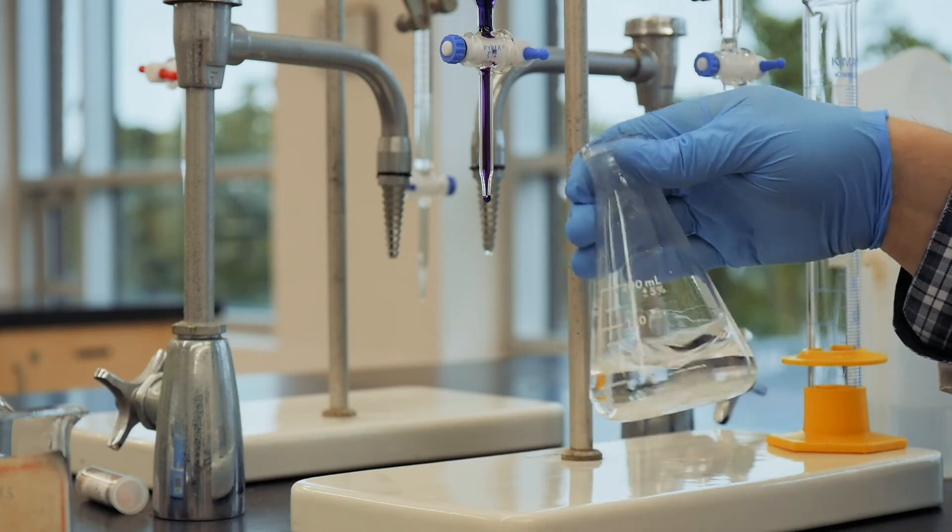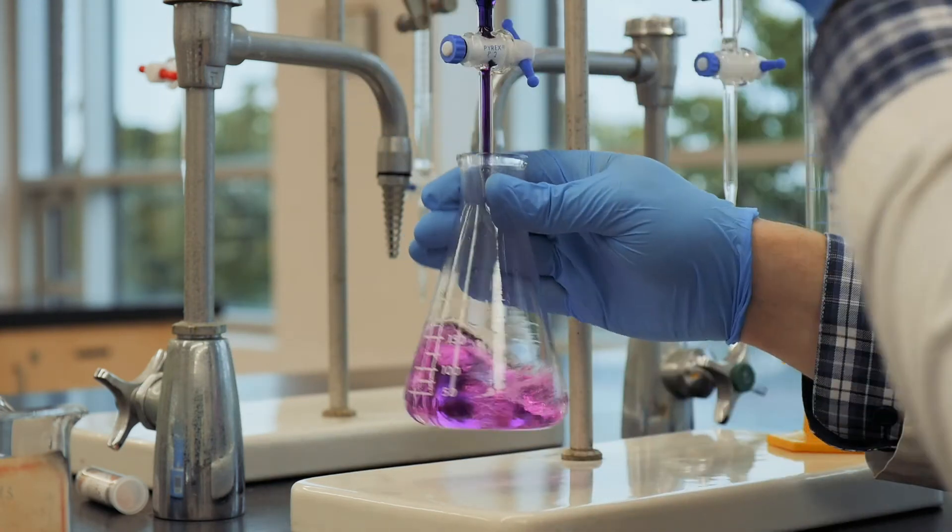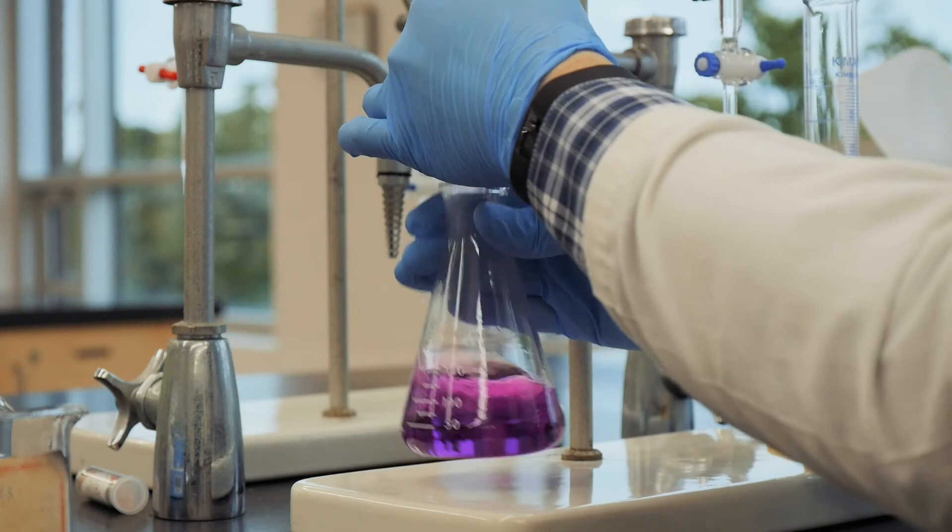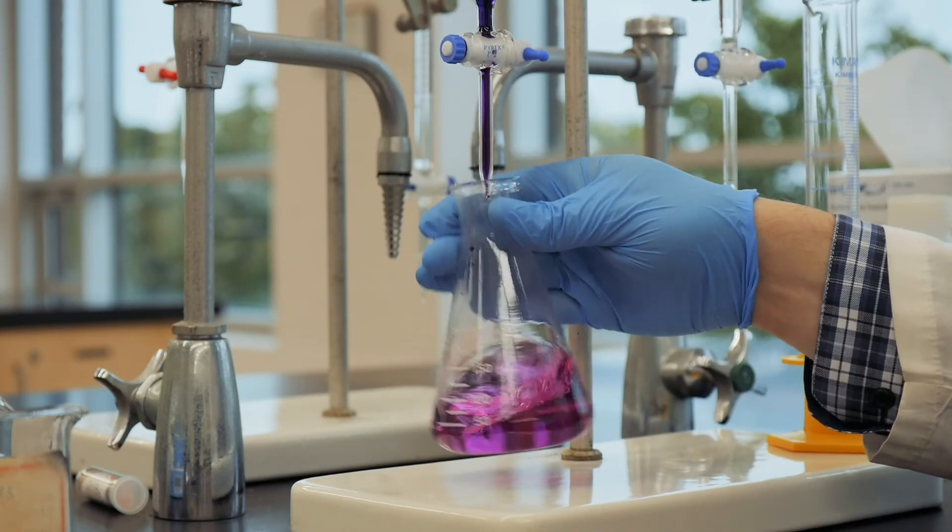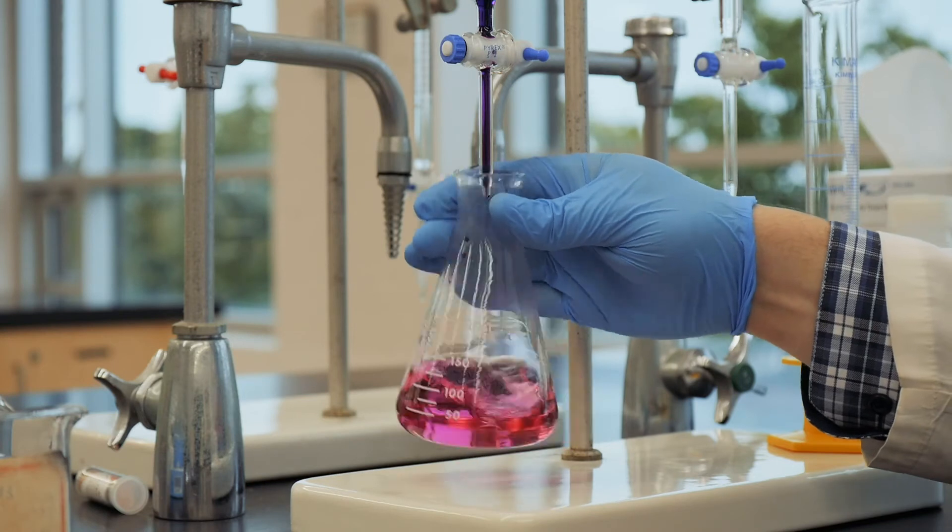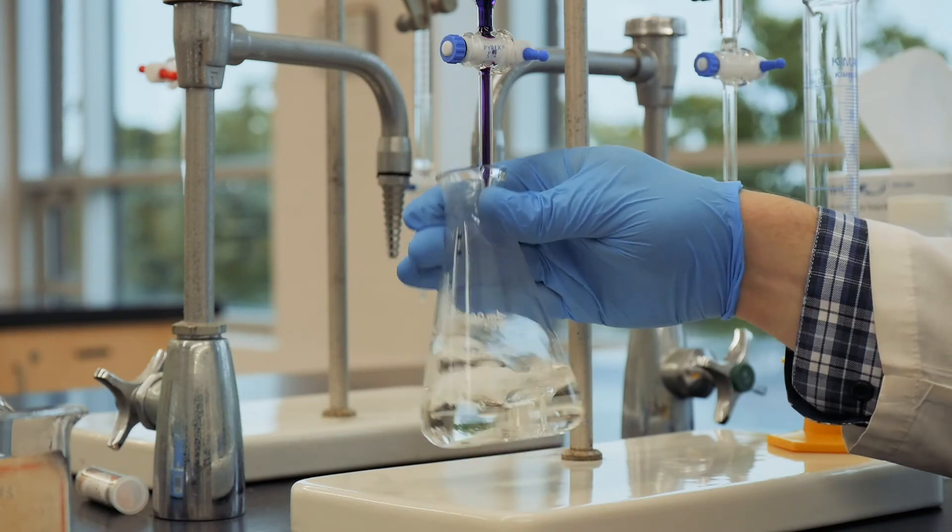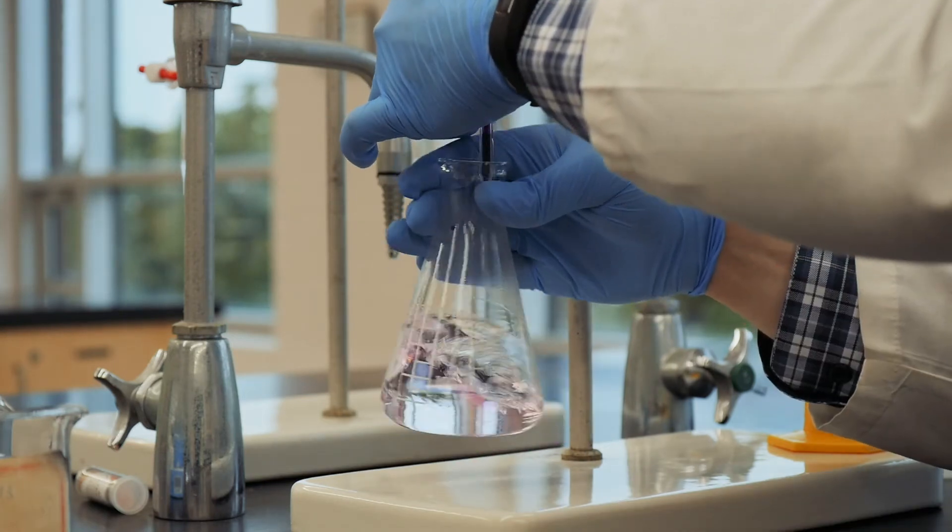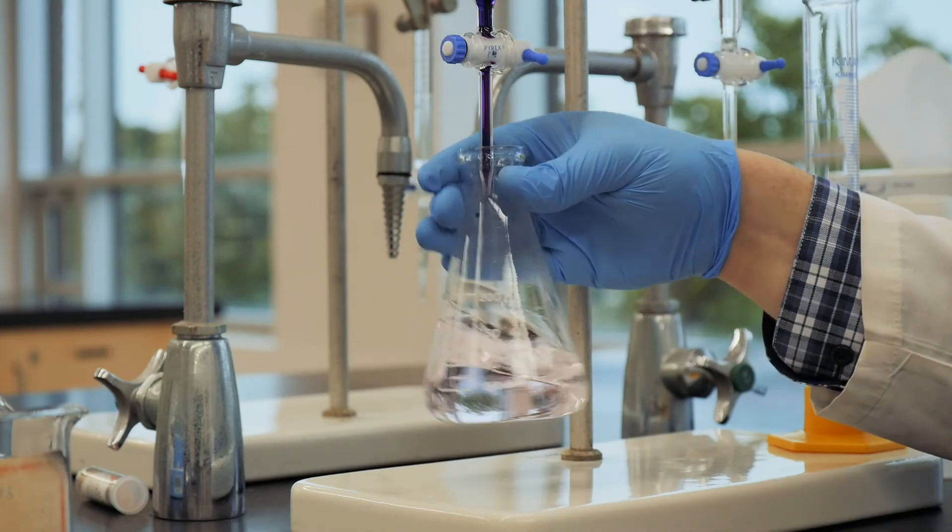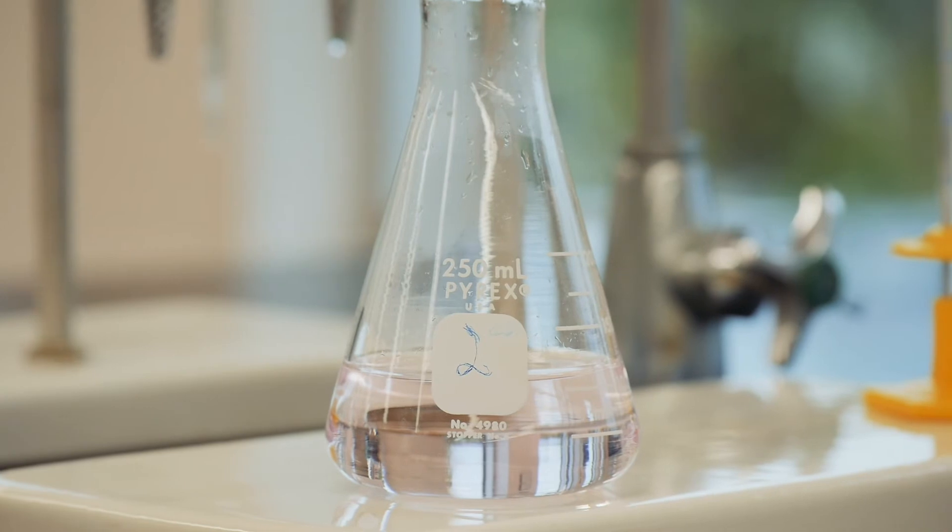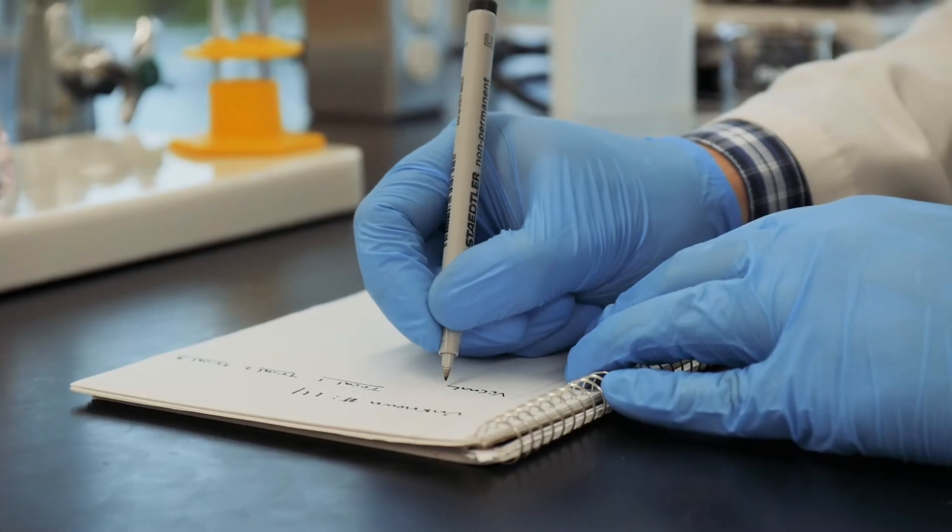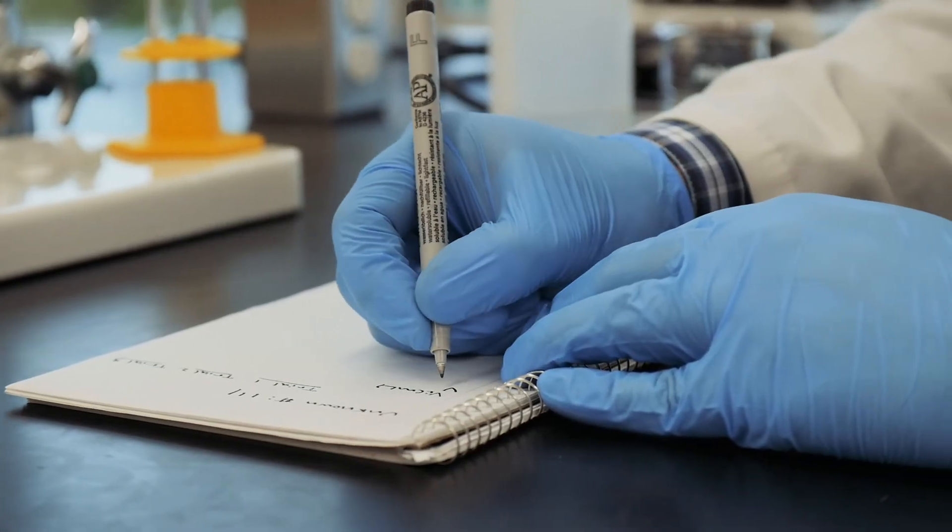If the solution doesn't become clear again, try reheating it to see if this helps. If it doesn't, unfortunately you'll have to start over. If the solution does become a clear solution again, you can then titrate at a quicker rate until the endpoint is getting near. You'll know you've reached the endpoint of the titration when you see just the first permanent pink tinge to the solution.